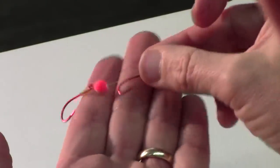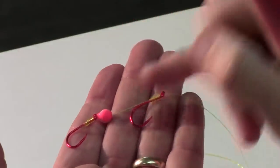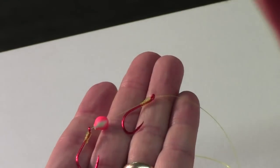So now I've got two hooks in tandem and I've got a glow ball in between, a bead in between whatever.